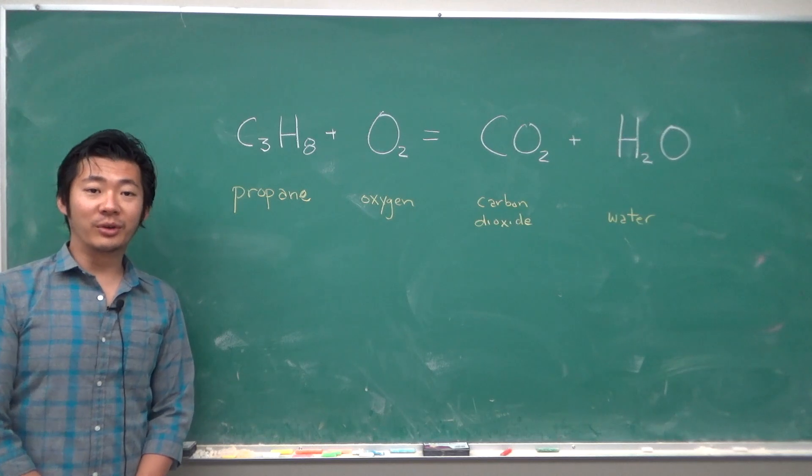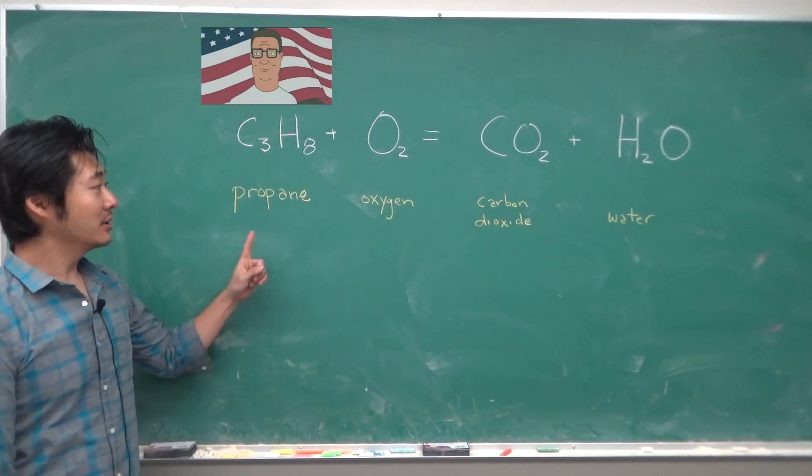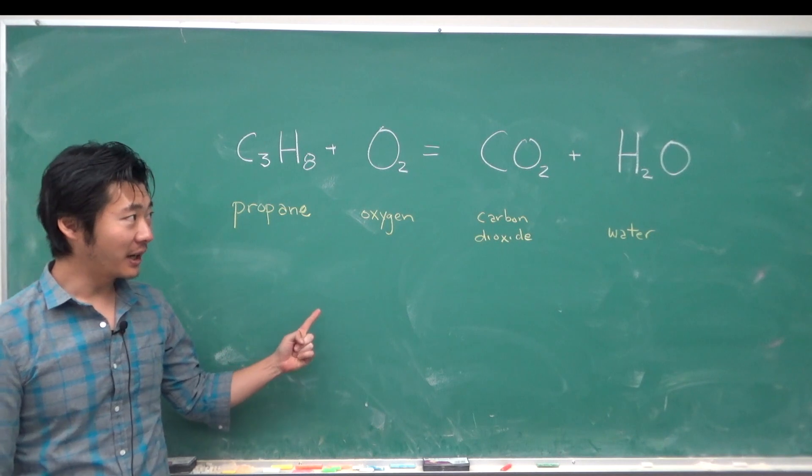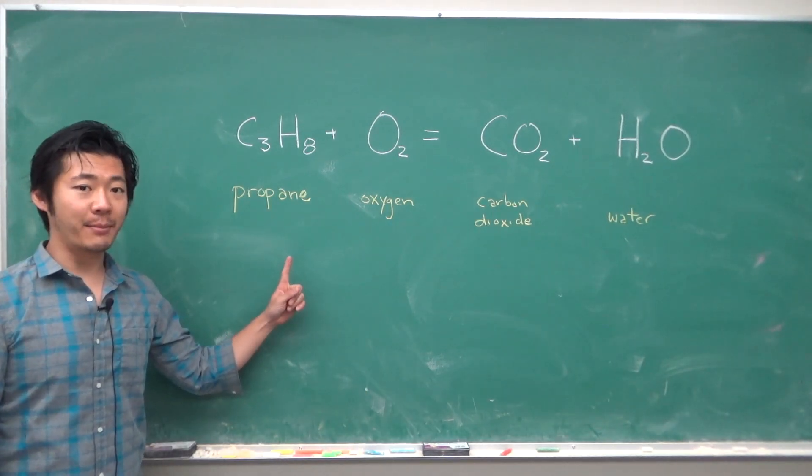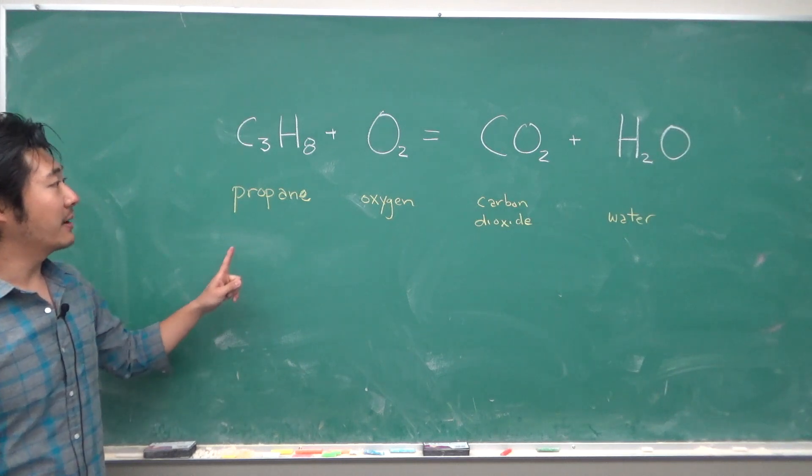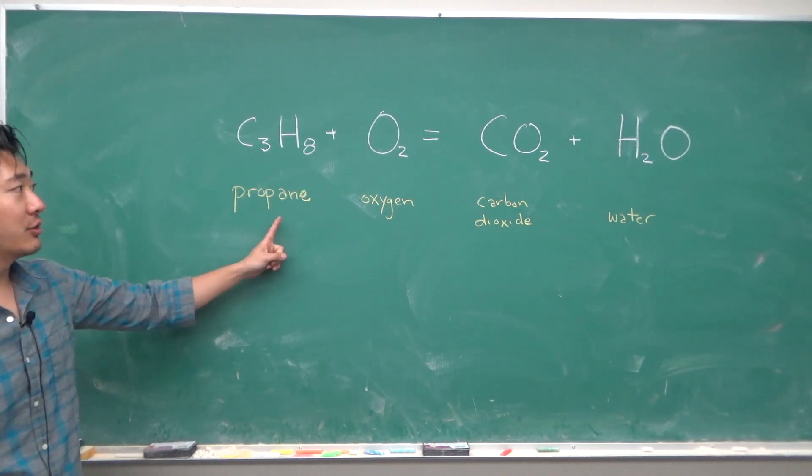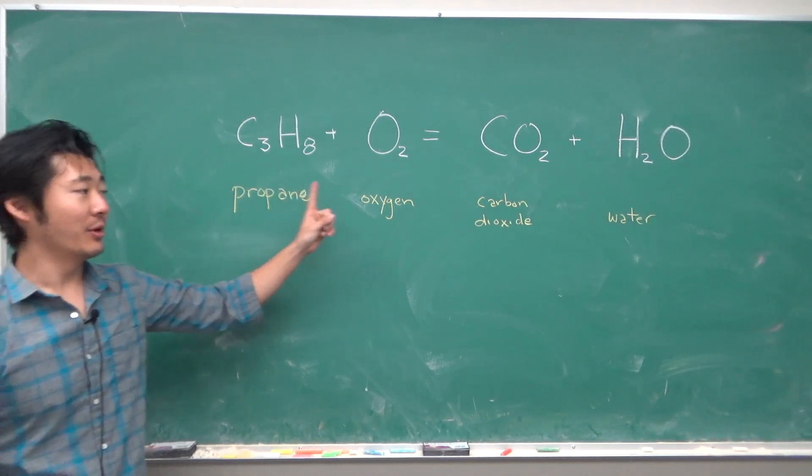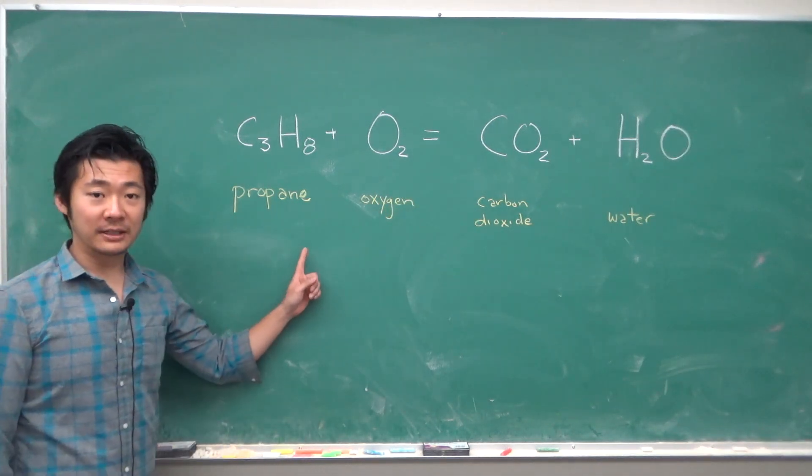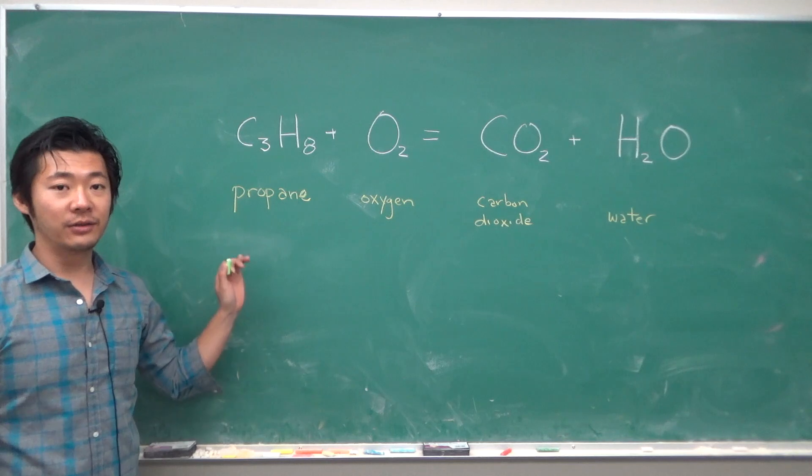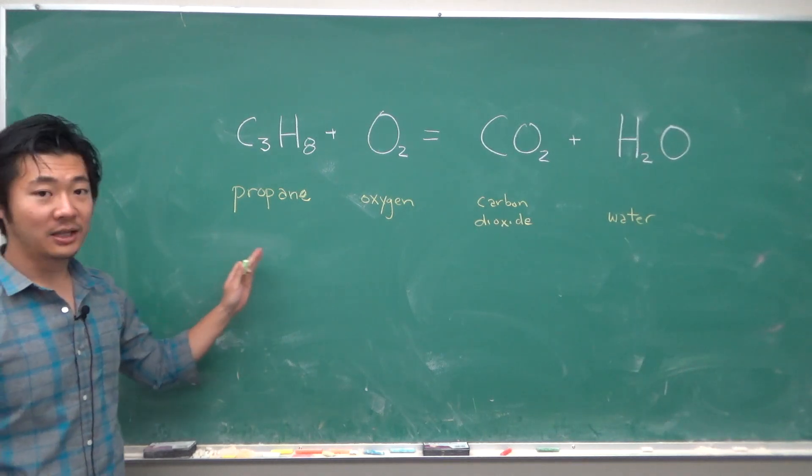For example, when propane burns with oxygen, it produces carbon dioxide and water, except that this chemical equation is not balanced. There's not the same amount of carbon and hydrogen and oxygens on both sides, so this equation cannot be correct. What we have to do is figure out how many parts of each are required in this chemical equation.